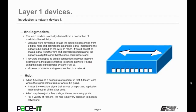Then there's the hub. A hub functions as a concentrator or repeater in that it doesn't care where the signal comes from or where it's going — kind of like the modem. It takes an electrical signal that arrives on a port and replicates that signal out all of its other ports. A hub may have just a few ports or it may have many ports. For a variety of reasons, the hub is not very common anymore in the modern network.